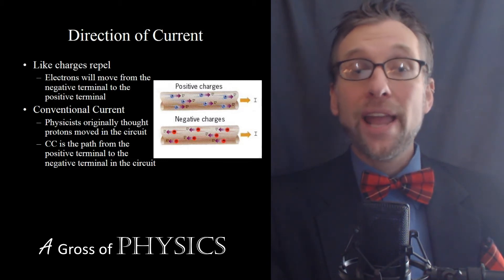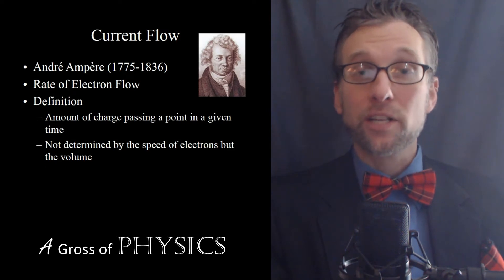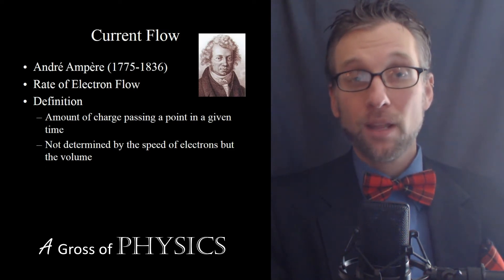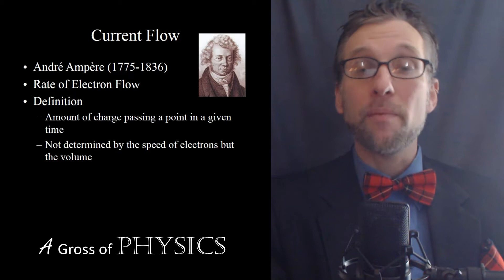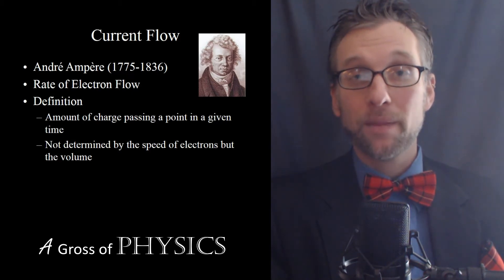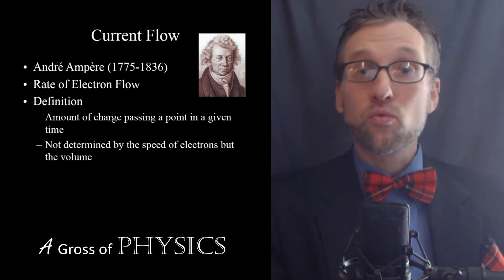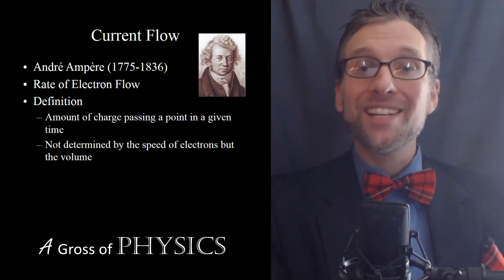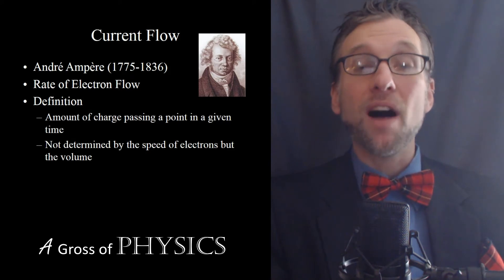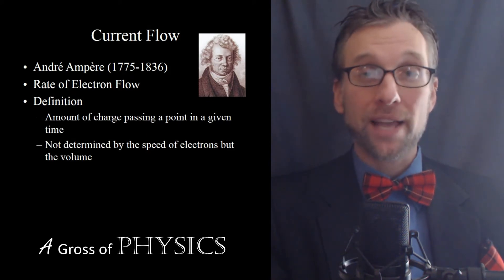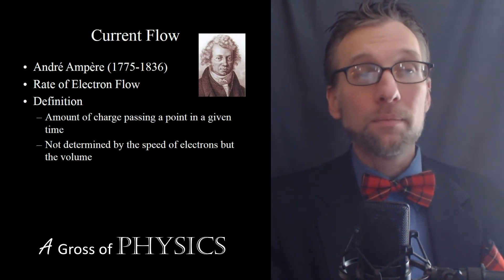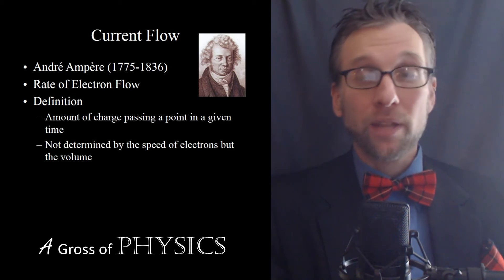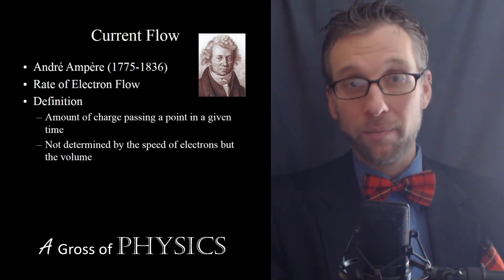André Ampère was the one who defined the electric current flowing through a circuit, and what he did is he defined it as the amount of charge flowing through a point in a given time. Now that is a rate of current flow, and it's important that we remember that it's not the speed of the electrons flowing, it's just the volume of charge flowing past a given point in a given time. The electrons are not racing around the circuit like cars would in a Mario Kart type game.